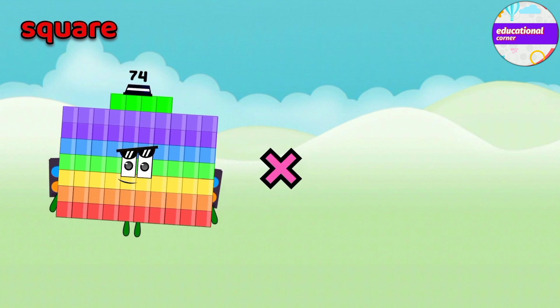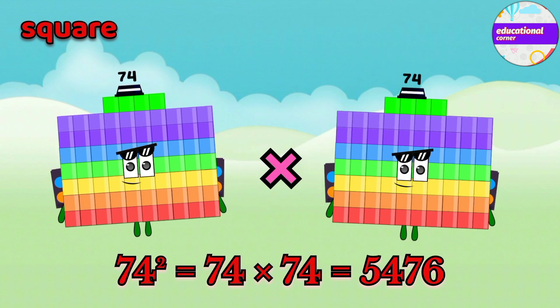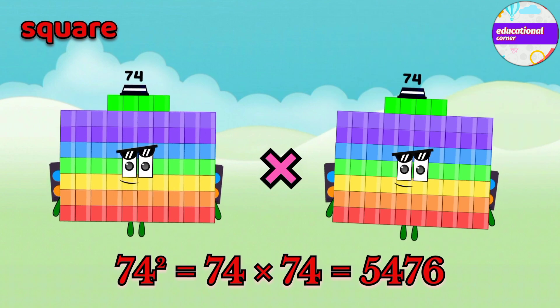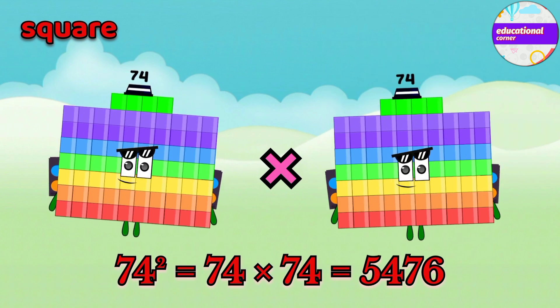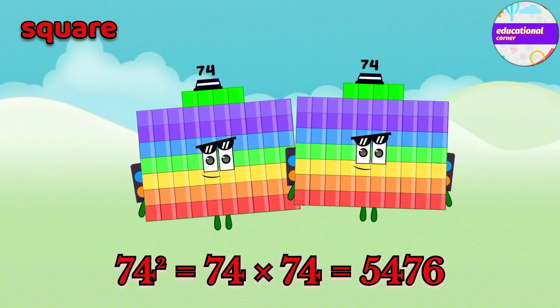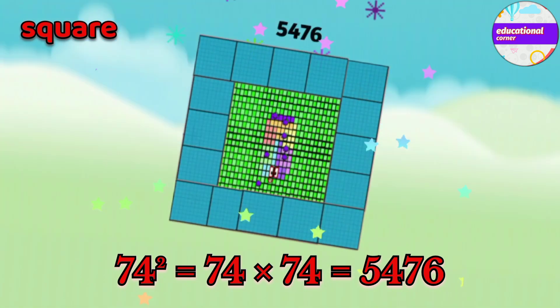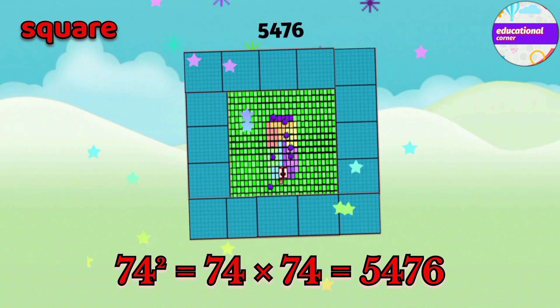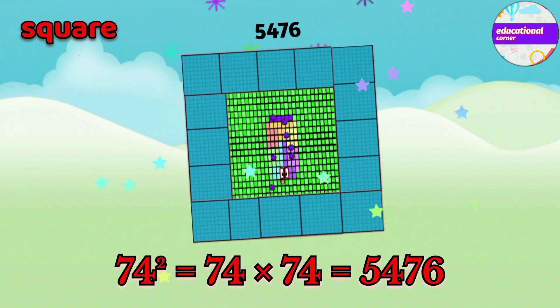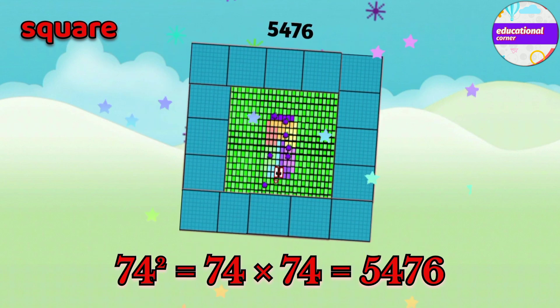74 multiply by 74. The square of 74 is 5476.